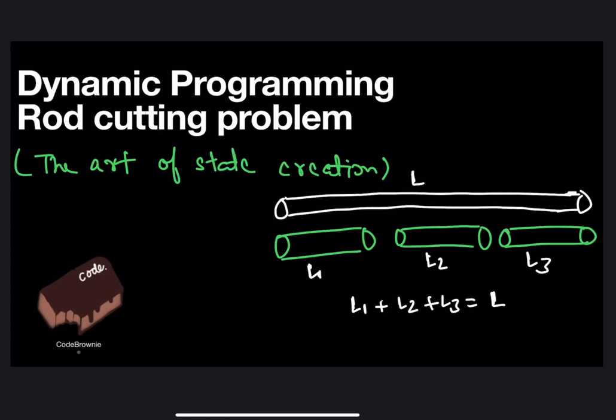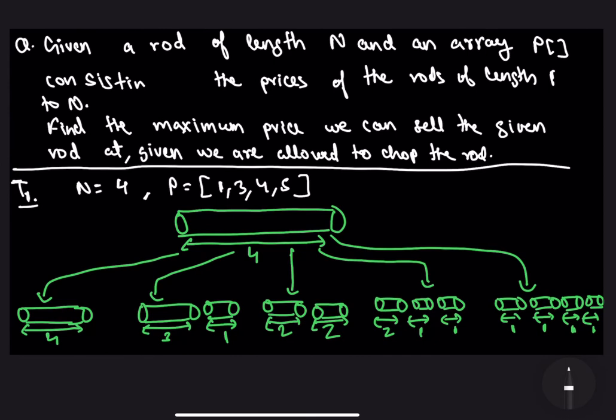In this video we will be trying to understand the theory behind a very standard dynamic programming problem - the rod cutting problem. The problem is: given a rod of length N and an array P consisting of the prices of rods of length 1 to N, where P[i] represents the price of a rod of length i, we have to find the maximum price we can sell the given rod at, given that we are allowed to chop the rod into rods of smaller length.